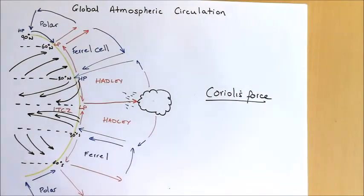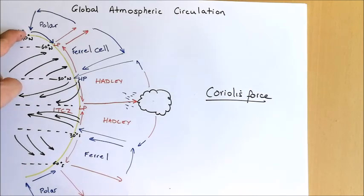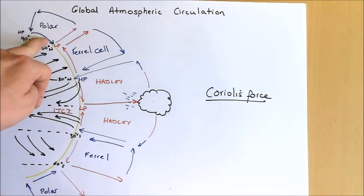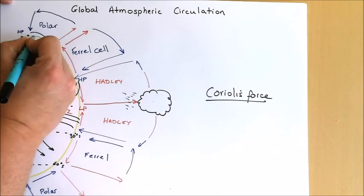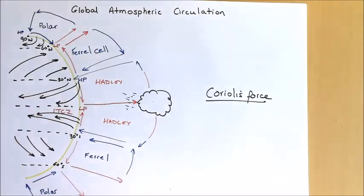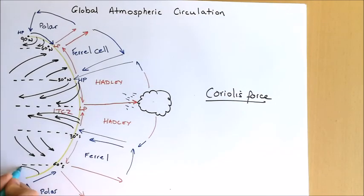Finally, if we look at the polar cell and consider the Coriolis force at the poles: we've got air moving from the polar high — that area of high pressure at the north and south pole — back towards the equator. In the northern hemisphere, air is deflected to the right, so it moves from east to west. And in the southern hemisphere, the air is deflected to the left, again moving in that same east-to-west direction.